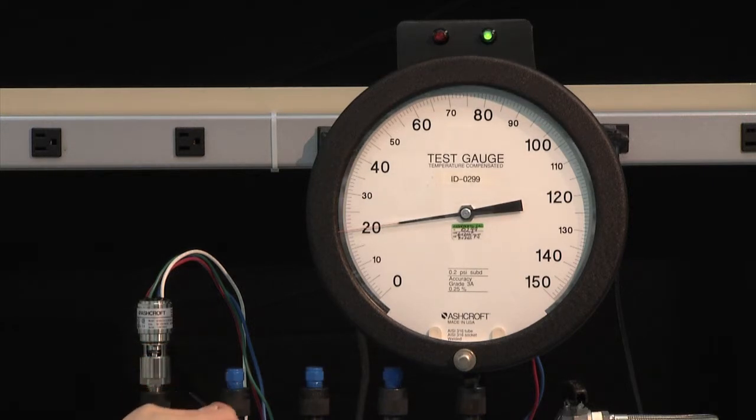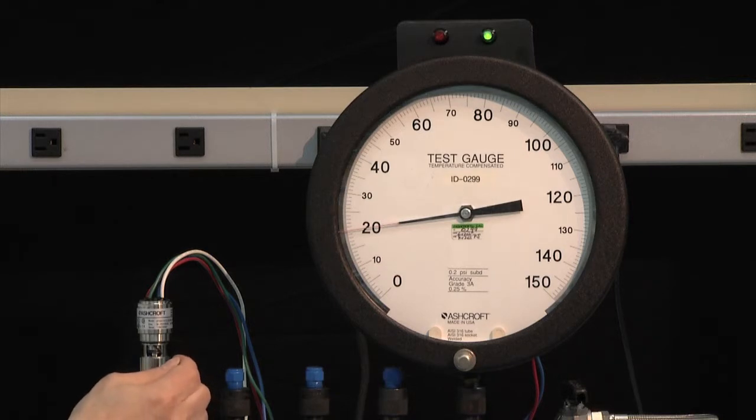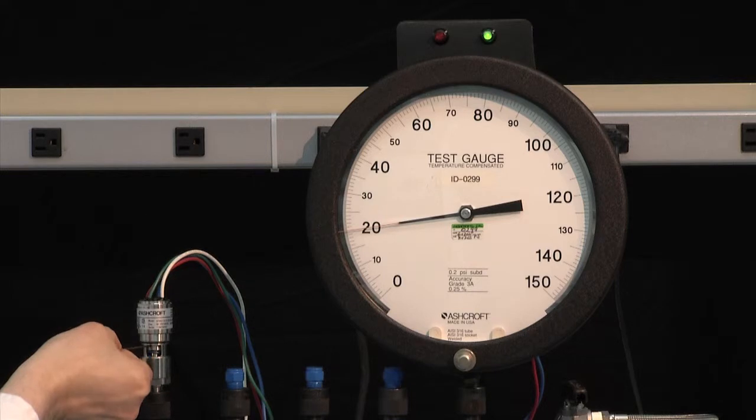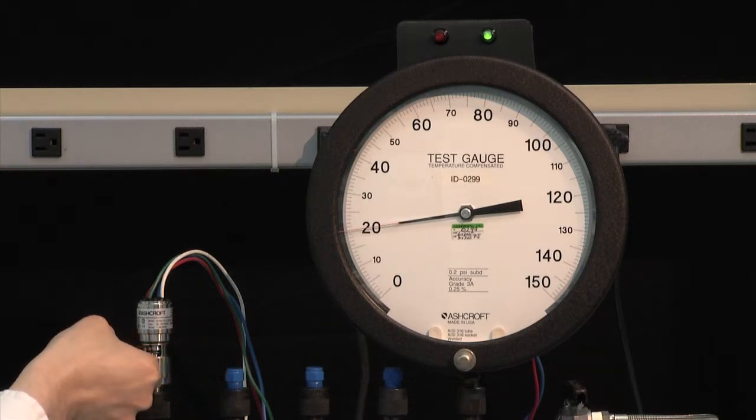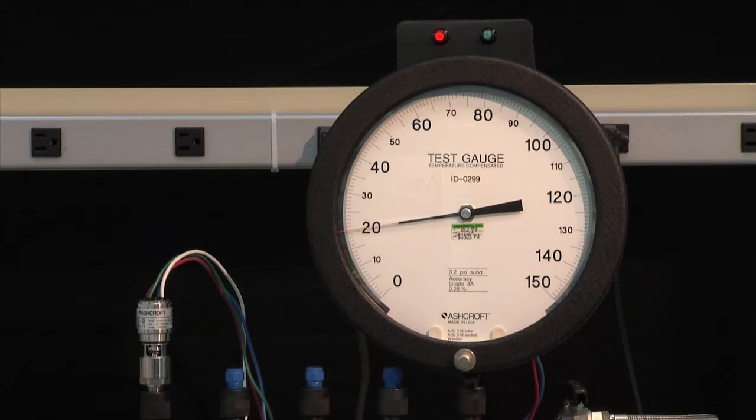Now we will go back clockwise until the switch turns off. Now we have approximately set the switch, so we will have to test it and see exactly where we have set it. We will drop it to zero.